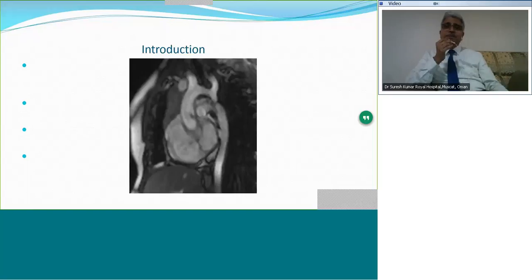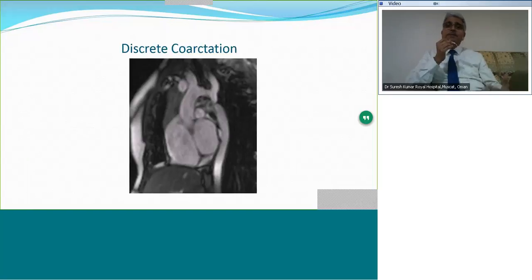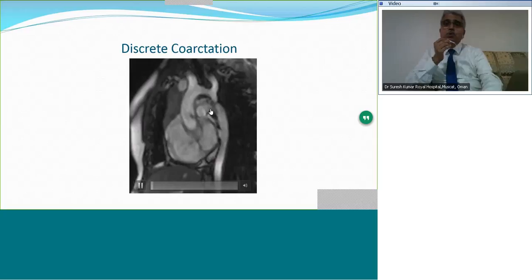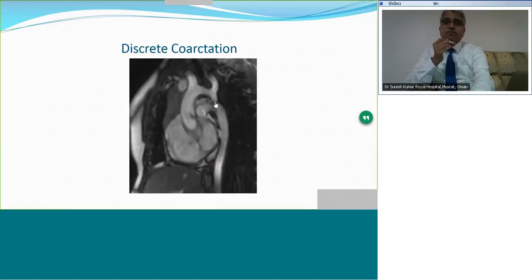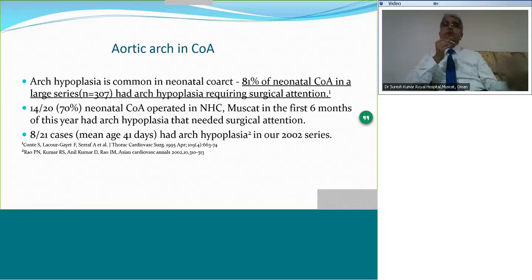This is a cardiac MRI image of a discrete coarctation. See the narrowing which is seen in the true juxtaductal portion — a very discrete narrowing. Coarctation seldom occurs with such localized narrowing. More often, you have problems involving the aortic arch. So we need to look at the aortic arch in coarctation in some detail, because arch hypoplasia is common.